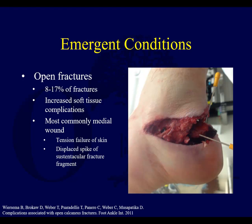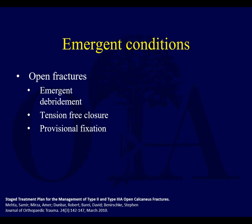Open fractures are another emergent condition. They usually occur on the medial side, and oftentimes you'll have a transverse-type laceration medially — it's a tension failure of the skin and the sustentacular fragment comes through. These are cases where, when you go to debride and eventually fix them, you'll be on that medial side rather than the lateral side, where you can sometimes provide direct buttress fixation. Of course, these are going to have increased complications due to soft tissue healing, so you have to be very careful in an injury where you already have to be very careful.